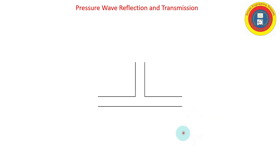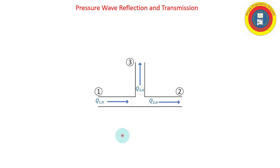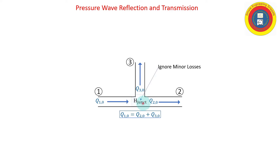Let's start with our three-pipe junction: pipe number one on the left, pipe number two on the right, and pipe number three going vertical. I've identified a small control volume at the intersection. In steady state, flow comes in from pipe one and splits into pipes two and three. Continuity must be satisfied at the junction. The head at the junction is the same for all three pipes, ignoring minor losses.